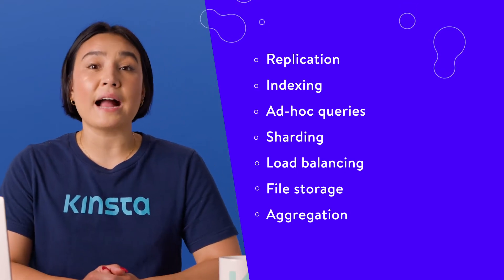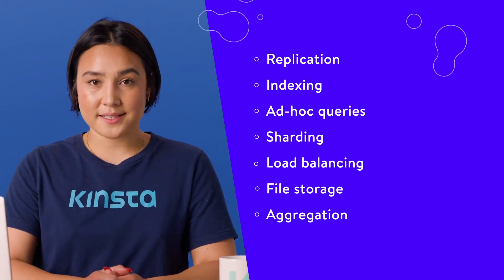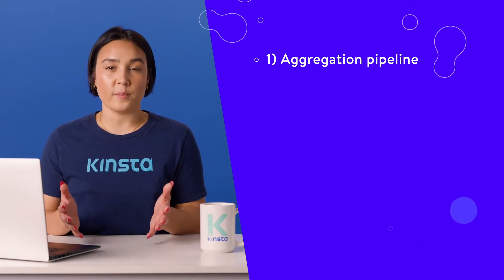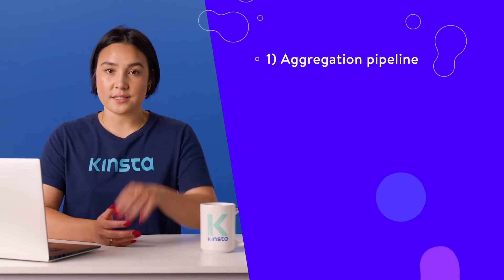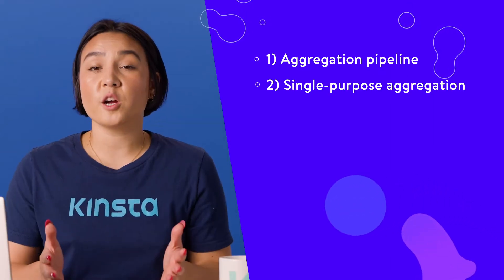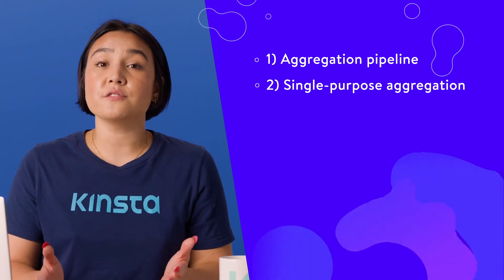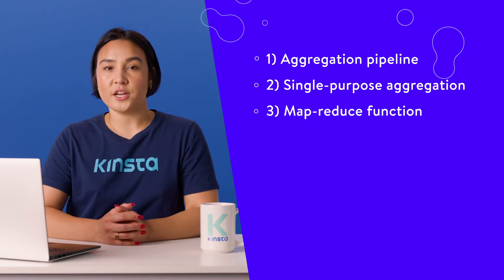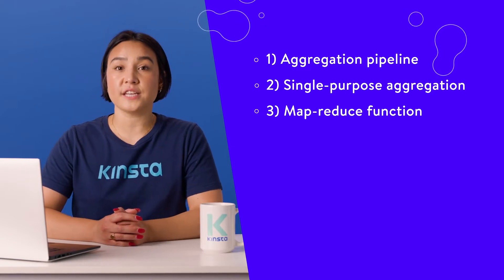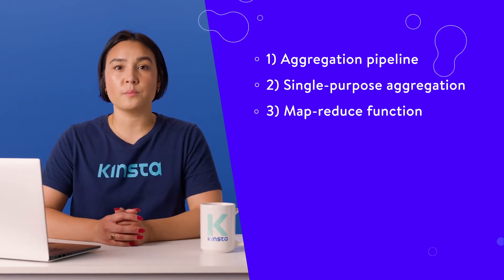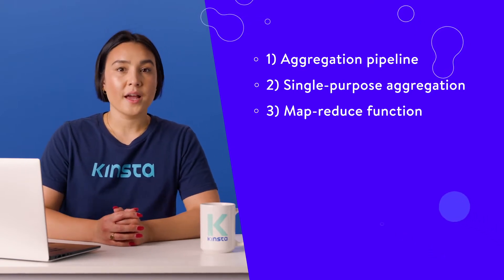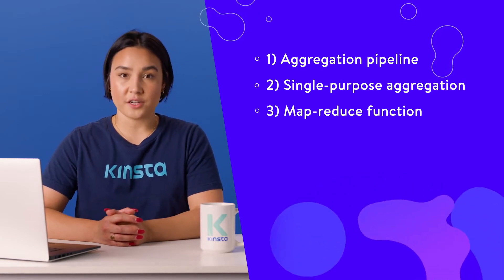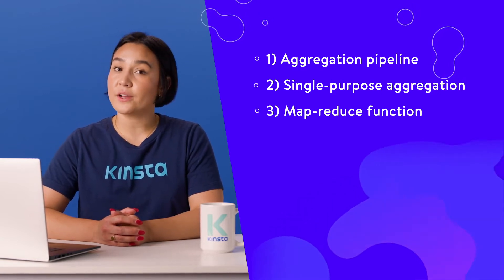MongoDB offers three aggregation methods. Aggregation pipeline: This offers better aggregation performance than others for most operations. Single purpose aggregation: This is used to aggregate documents out of one collection. Map-reduce function: This is used for batch data processing to bring aggregated results. The map function groups data by key value, while the reduce function performs operations on it.